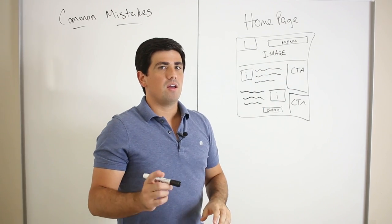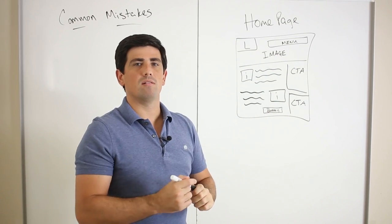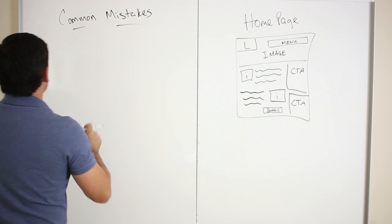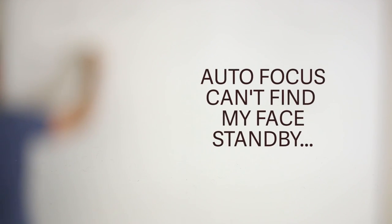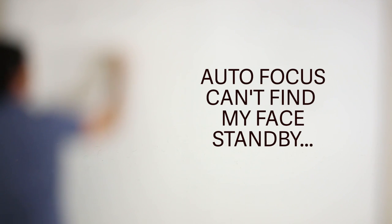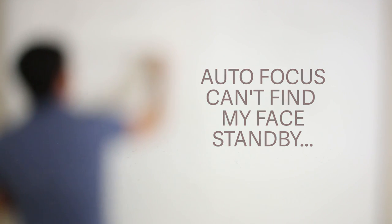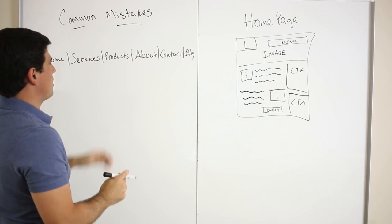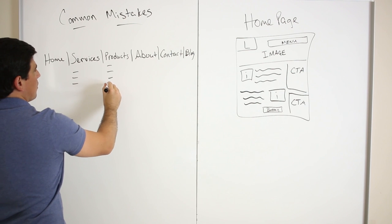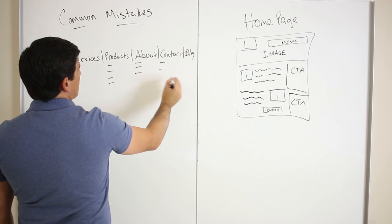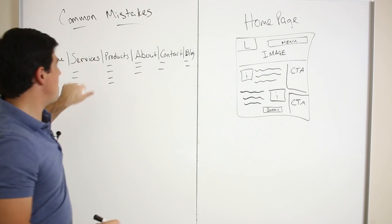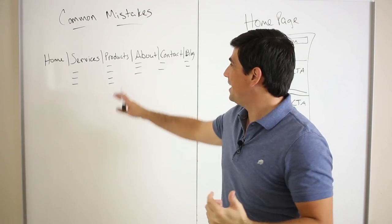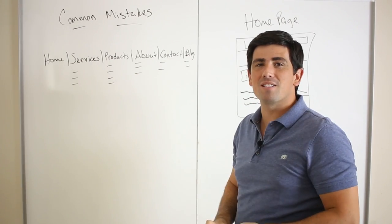Say you have a menu, and so many people have Home as their first menu item, then Services, Products, About, Contact, Blog — a pretty typical layout. Then maybe you have some sub-options under each. You need to count up all those things in your menu — every single thing that somebody could do. It's insane how many options and paths somebody could take.